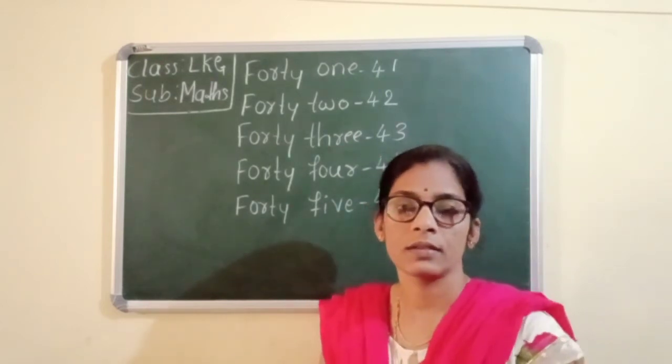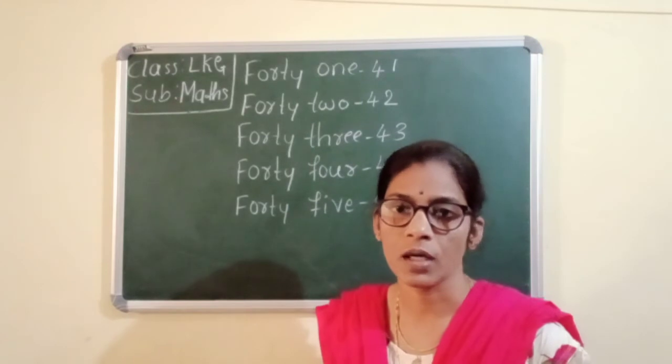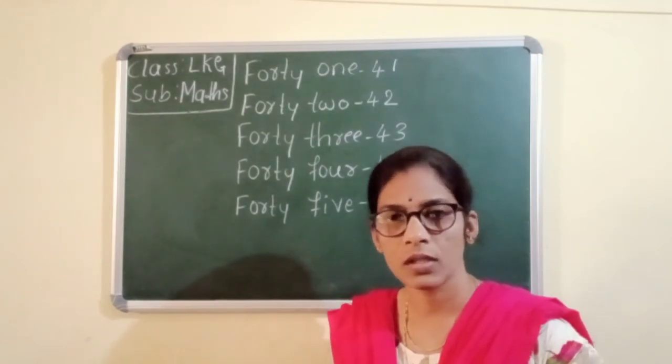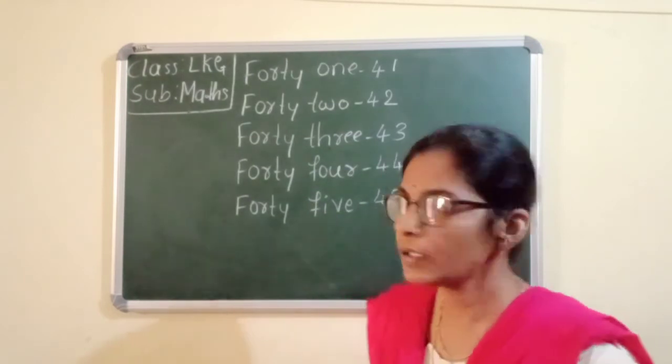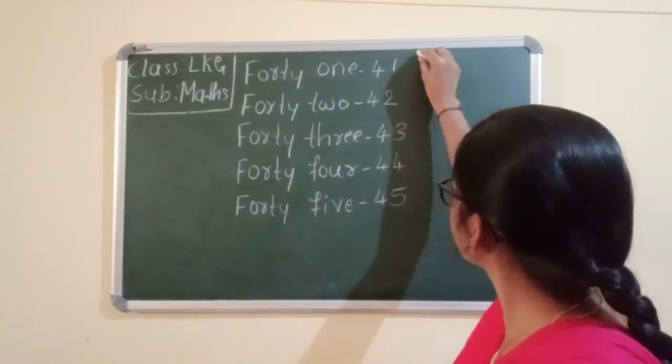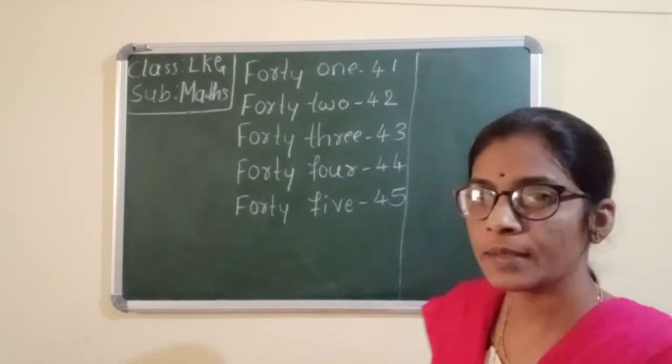Next I will revise the tables. Two ones are, only one line I will revise. Daily one line I will revise and write here. Tell me children, tables, here it is. Two ones are, look at here.